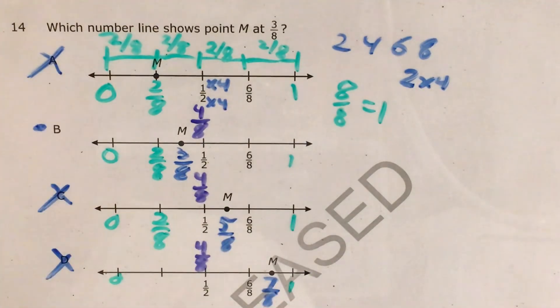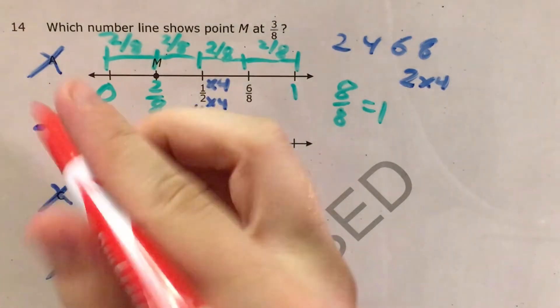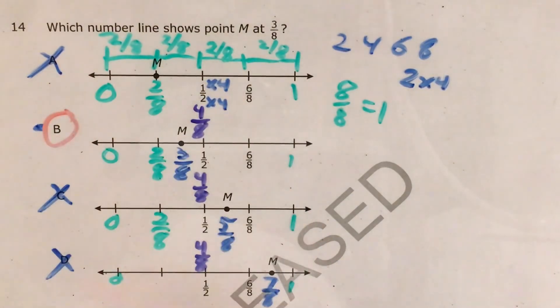So now that we've knocked out all the other answer choices, we can say pretty definitively, we can say with a lot of confidence that choice B is our answer. This number line has M at three-eighths because it's right between two-eighths and four-eighths.